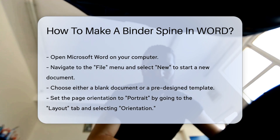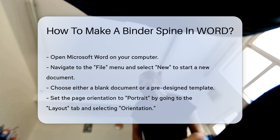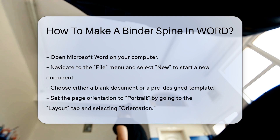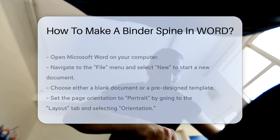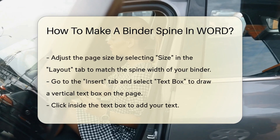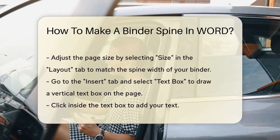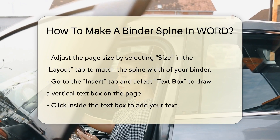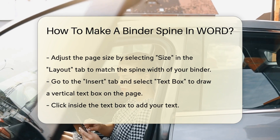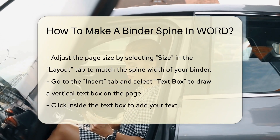Next, set the page orientation to Portrait by going to the Layout tab and selecting Orientation. This ensures the spine design fits the binder's dimensions. Then, adjust the page size by selecting Size in the Layout tab. Choose a size that matches the spine width of your binder.